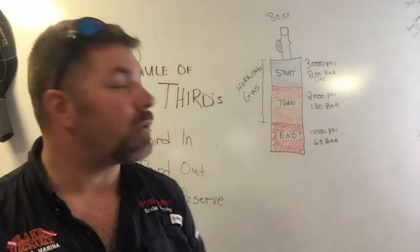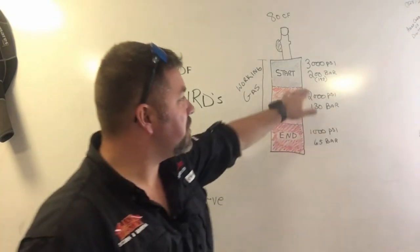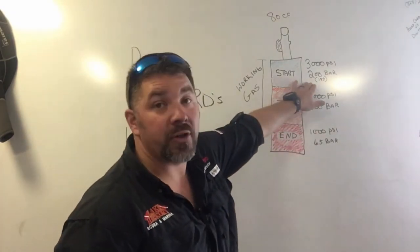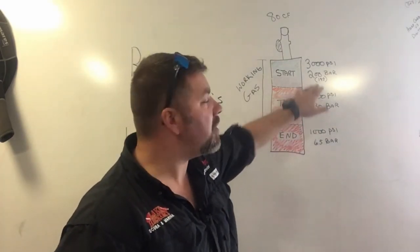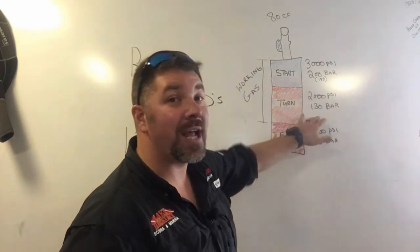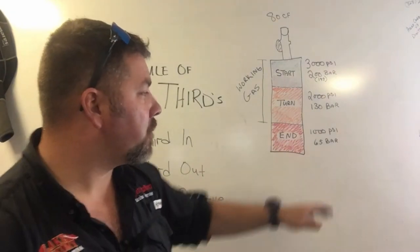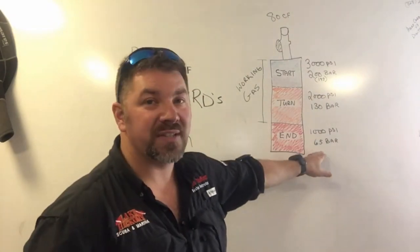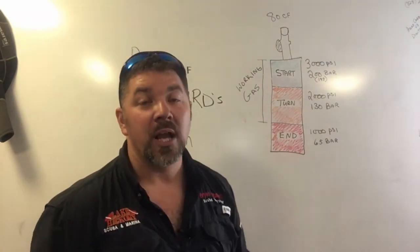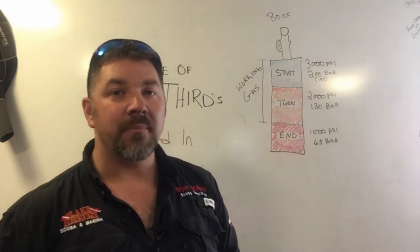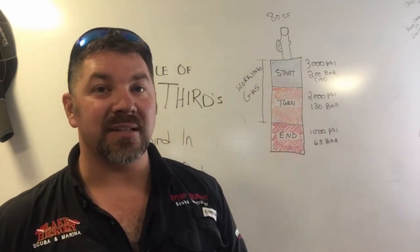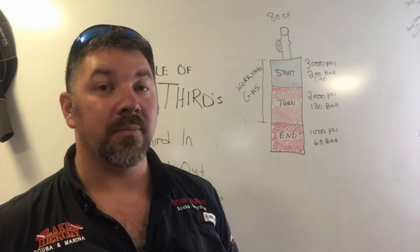I'm going to start my dive with 195 bar, I will turn at 130 bar, and then I'll end with 65 bar. It doesn't really matter the size of the cylinder or how many cylinders you have — simply take the total working pressure and divide it by three.